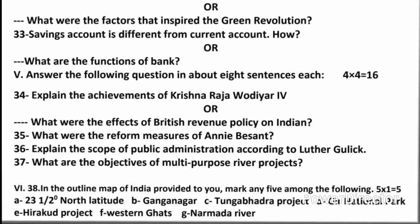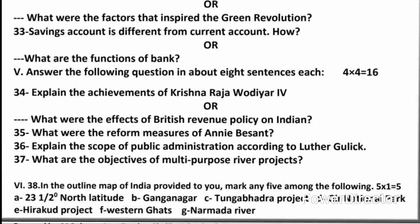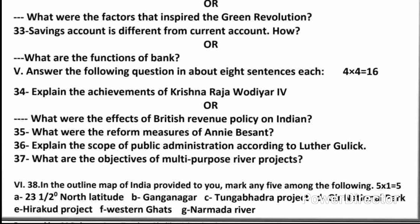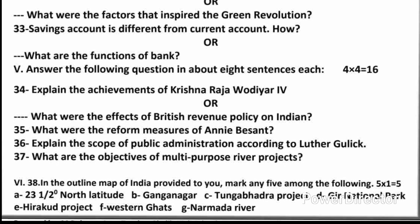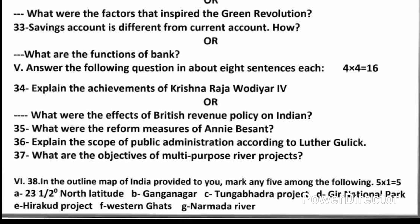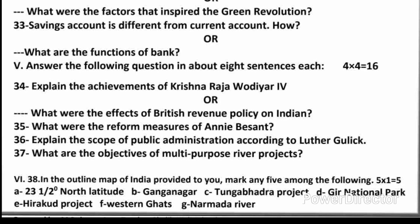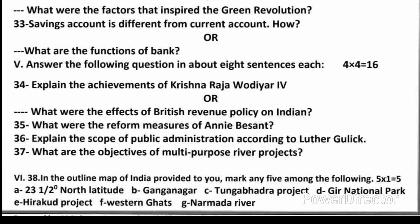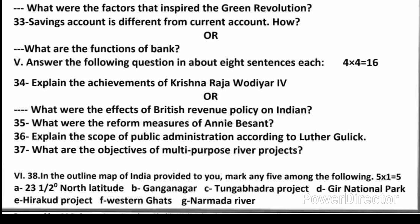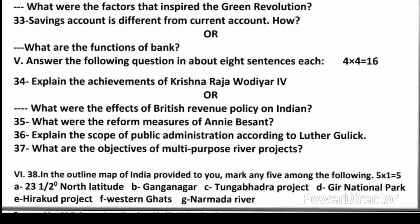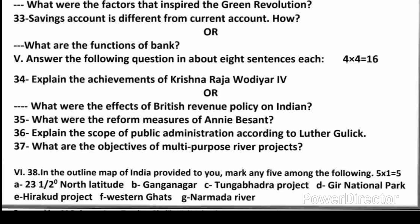Question 38: In the outline map of India provided to you, mark any five among the following — A. 23.5 degrees north latitude, B. Ganga Nagar, C. Tungabhadra Project, D. Gir National Park, E. Hirakud Project, F. Western Ghats, G. Narmada River. Shown on maps.